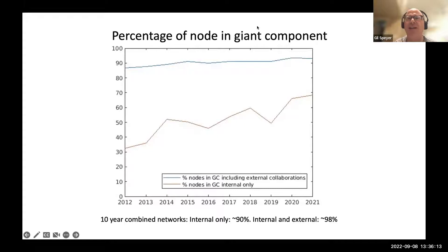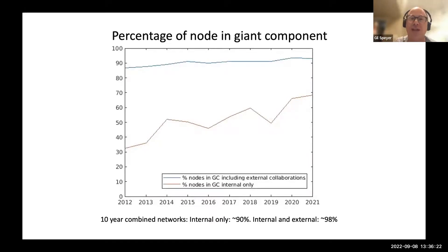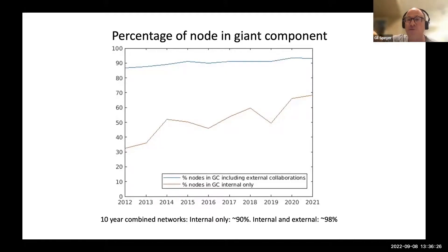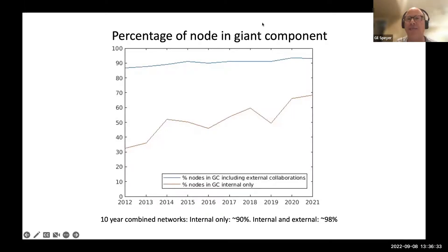Looking over the years, consolidating shows the giant component gets very close to 100%, suggesting there's a lot of mobility — people move from one institution to another and bring their collaborations with them, improving connectivity. We're closing by saying that if anybody wants to work with us on this, we're really eager to find partners to do comparisons, look at different types of schools and institutions. Happy to collaborate with anybody.